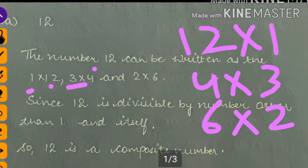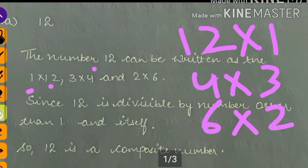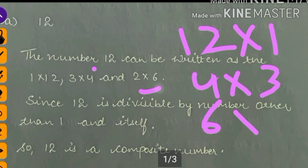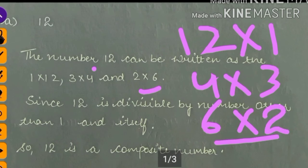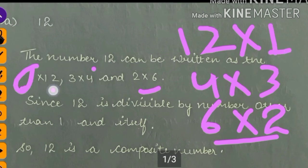Now 3 into 4 gives 12, and 4 into 3 also gives 12. And 2 into 6 gives 12, and 6 into 2 also gives 12. Is that clear? We have two multiples with position changed — the first becomes second and the second becomes first.